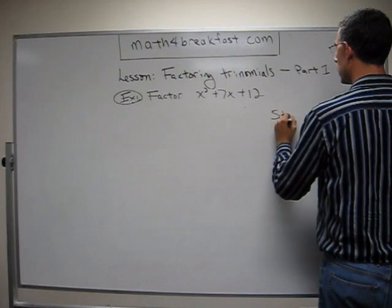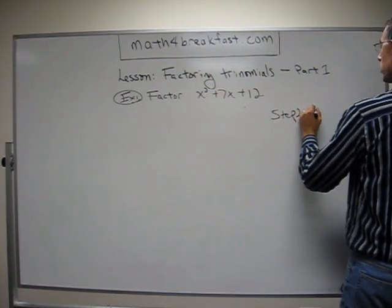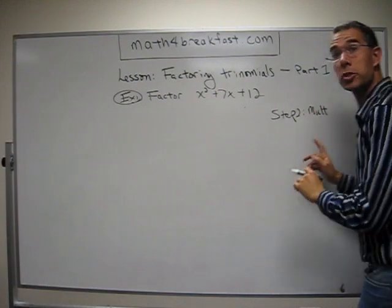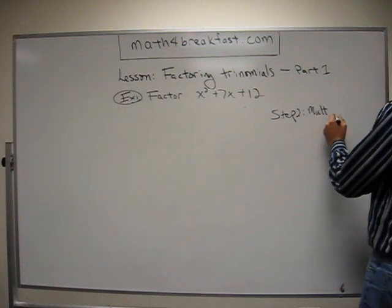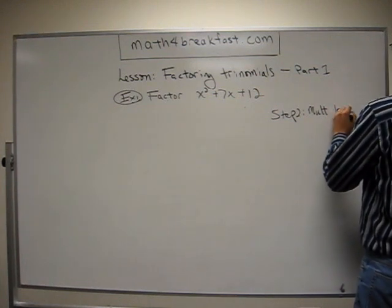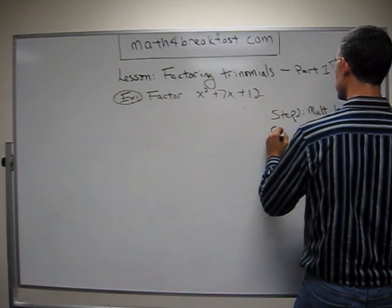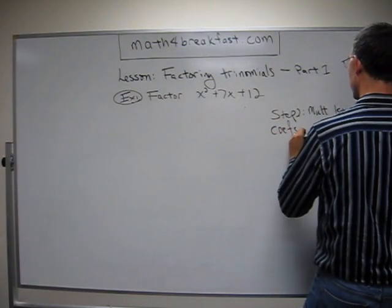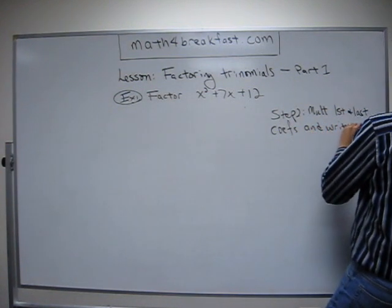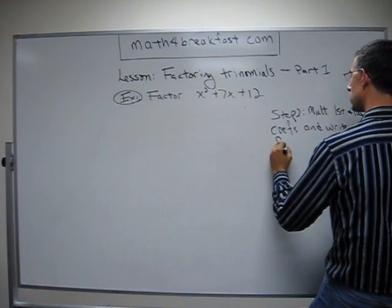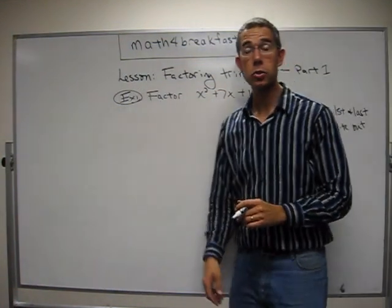Nothing common to all of those brings us to Step 2. I want to have plenty of room for Step 2, so I'm going to quickly erase what I've got. Step 2 is to multiply — again, something you already know. Multiply the first and last coefficients, which I'm going to abbreviate COEFS, and write out the factors. To factor, I need to do a lot of factoring.